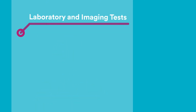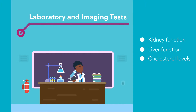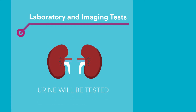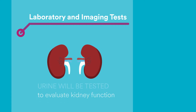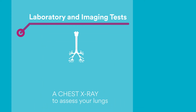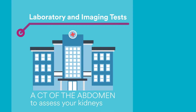Laboratory and imaging tests: you will have multiple tubes of blood drawn from your arm to evaluate your kidney function, liver function, cholesterol levels, the presence of diabetes, blood disorders, blood type, and other tests. In addition, your urine will be tested to evaluate kidney function. You will also have an electrocardiogram or EKG to assess your heart and a chest x-ray to assess your lungs. A CT of the abdomen will also be done to help assess the size and structure of your kidneys.